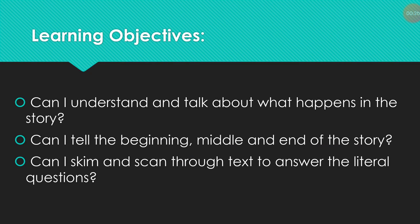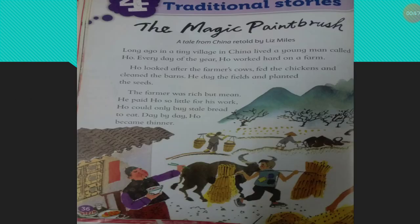Let's look at the learning objectives for this lesson. Can I understand and talk about what happened in the story? Can I tell the beginning, middle, and end of the story? Can I skim and scan through text to answer the literal question? Now come to page number 36 — it's unit 4 about traditional stories.